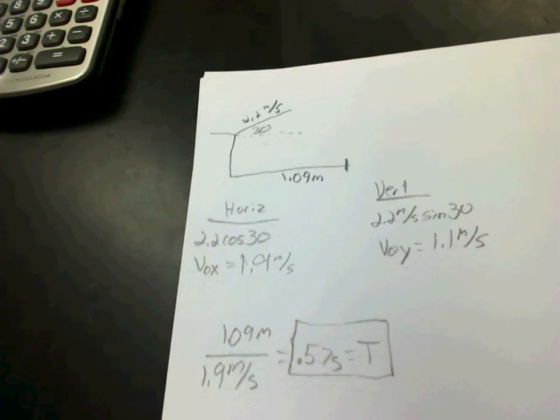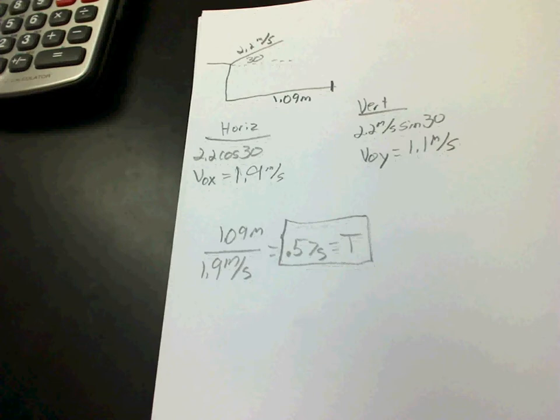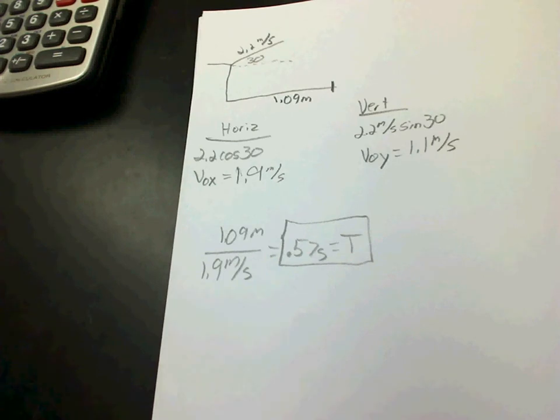Part C is where a lot of you got confused. Some of you nailed it. Others, others not. But that's okay. You can do it one or two ways. You can do it the easy way or the complicated way. And I think most of you are trying to do it the complicated way. But the easy way is just finding one of your kinematics. So we need to figure out what do we have. What do we have in order to figure out how high off the ground she actually is?